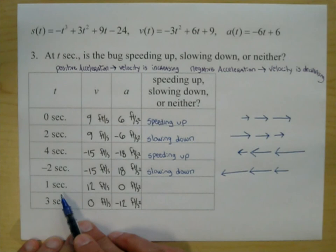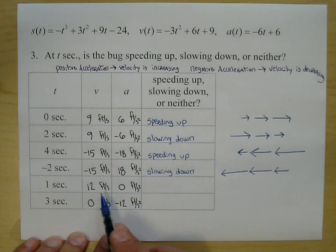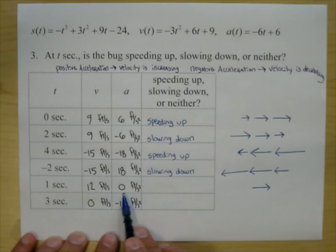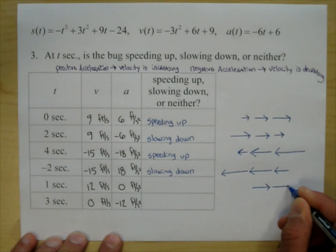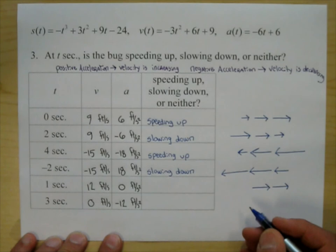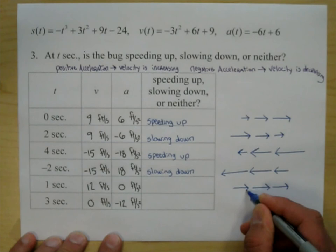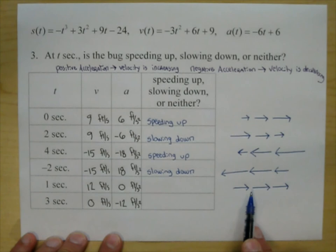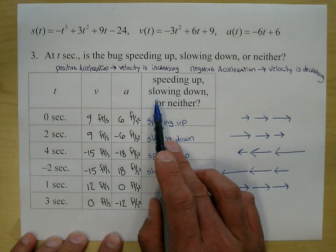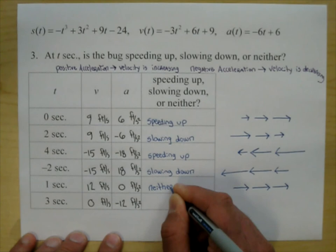At t=1, the velocity is 12 feet per second (positive) and the acceleration is zero. Zero acceleration means the velocity is not increasing and not decreasing — a split second before, the speed looks the same; a split second after, it's about the same size. The velocity is 12, 12, 12. So it's not speeding up, it's not slowing down. We say: neither.